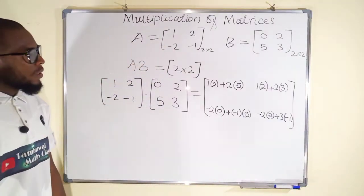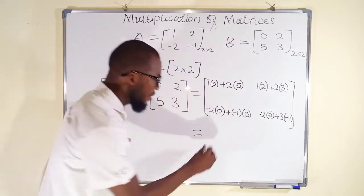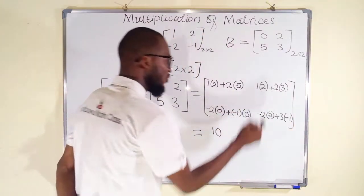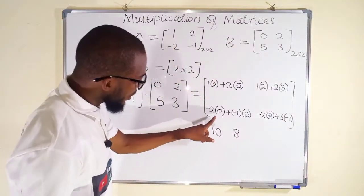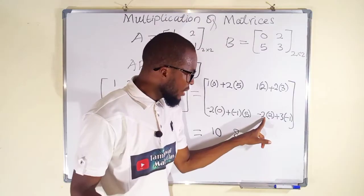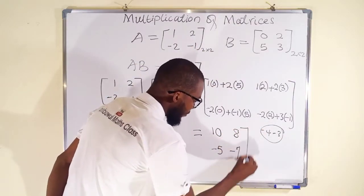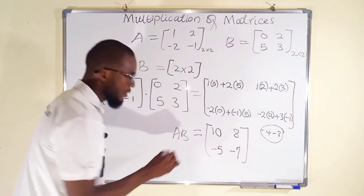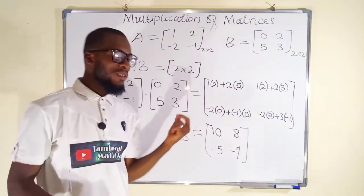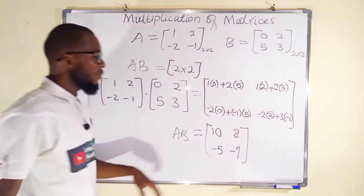Now let's simplify. For (1,1): 0 + (-10) = -10. Wait — 1×0 is 0 and -2×5 is -10, so we have -10. For (1,2): 1×2 is 2 and -2×3 is -6, giving 2 + (-6) = -4. Wait — let me re-read: 0+10=10 for (1,1), and 2+6=8 for (1,2). For (2,1): 0 + (-5) = -5. For (2,2): -4 + (-3) = -7.